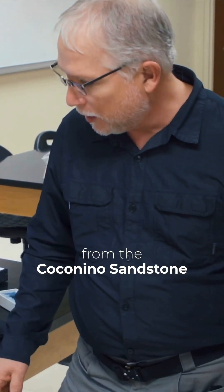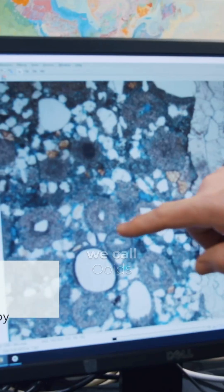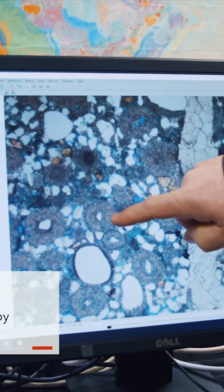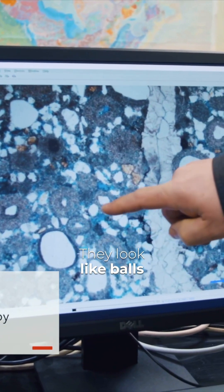This is one of the thin sections from the Coconino sandstones, and it has what we call ooids in here, and these are dolomite ooids. They look like balls, almost.